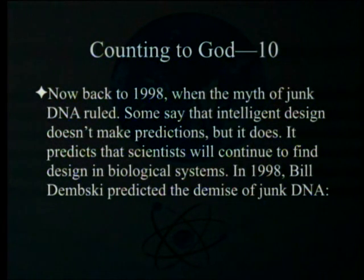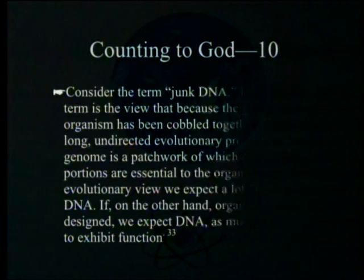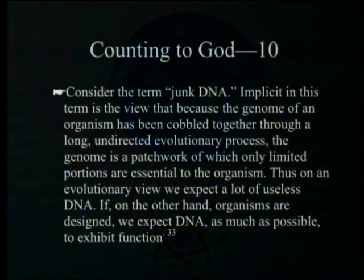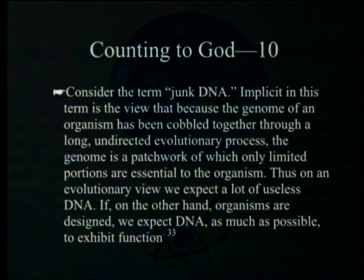Some say that intelligent design doesn't make predictions, but it does. It predicts that scientists will continue to find design in biological systems. In 1998, Bill Dembski predicted the demise of junk DNA. The term 'junk DNA' implies that because the genome was cobbled together through a long, undirected evolutionary process, it is a patchwork of which only limited portions are essential. Thus, on an evolutionary view, we expect a lot of useless DNA — the best people would say 90%.